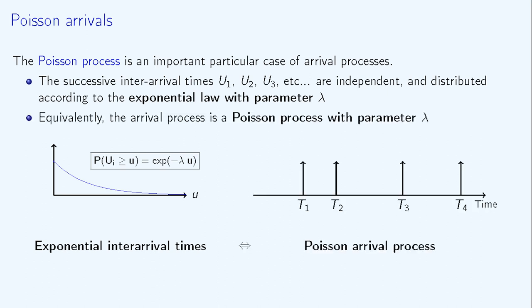In this case, when the interarrival times are independent and identically distributed according to an exponential distribution with parameter lambda, the arrival process is said to be a Poisson process of rate lambda.